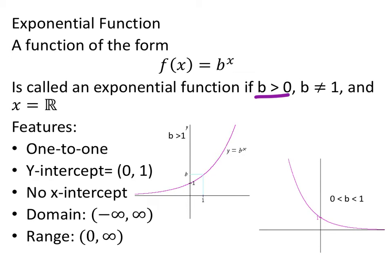And it's not necessarily that b can be 1, but if it was 1, you'd just have a straight line, because 1 times itself any number of times would just give you a straight line. It would just tell you that f of x is just always going to be 1.